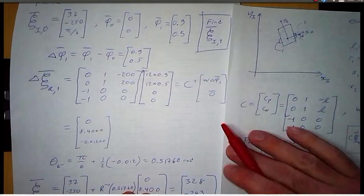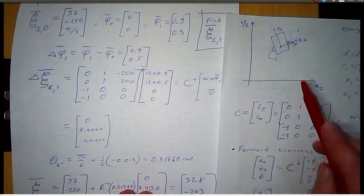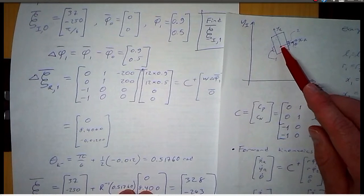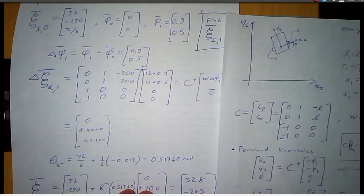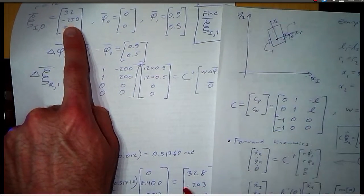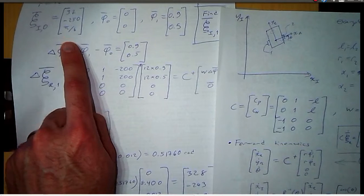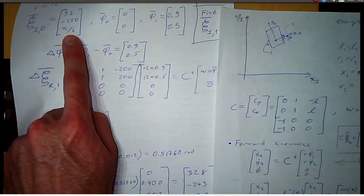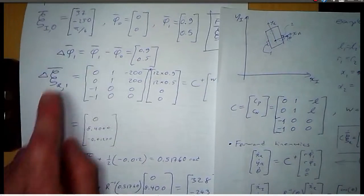We see that the x-coordinate has decreased, which makes sense as we're moving in that direction, and the y-coordinate has increased, which makes sense as we're going upward. Theta has decreased, so we've been turning in the clockwise direction. That was an example of using the odometry equation given the robot parameters and the wheel positions at two successive times.